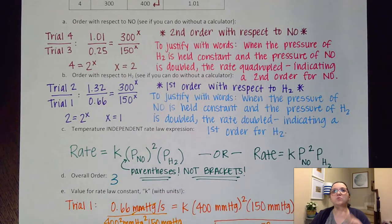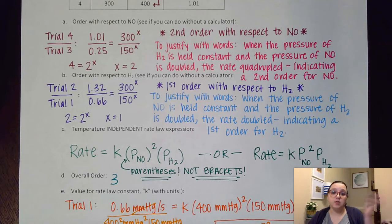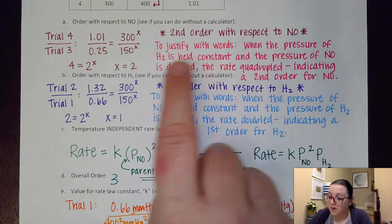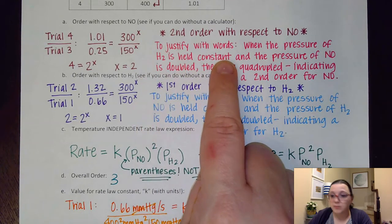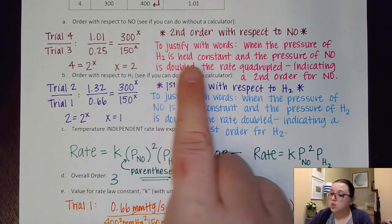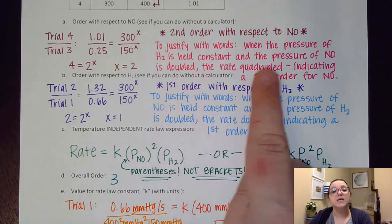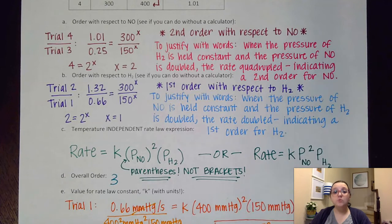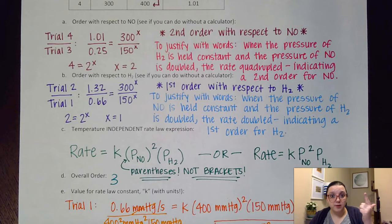However, let's say you did not want to show math on that FRQ question that you would rather justify using words. That is acceptable. Here's what you would need to write for that. It says, when the pressure of H2 is held constant and the pressure of NO is doubled, the rate quadrupled, indicating a second order for NO. You notice they mentioned what stayed constant, what the change was in the other reactant, what that did to the rate, and therefore what is the order.